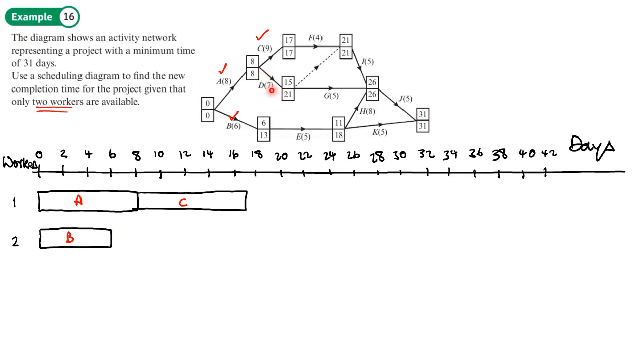We can't put activity D in here because that can't be started until day 8. So we will put in activity E because that can be started straight after activity B. That has a length of 5. Now we can slot in activity D because it's after day 8 and it's got a length of 7, which means it would finish at 18, which is fine because we can finish up to day 21.